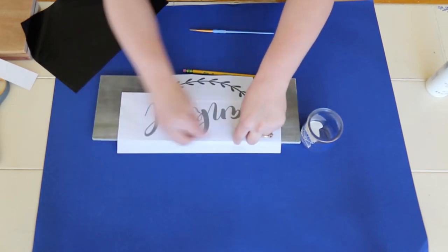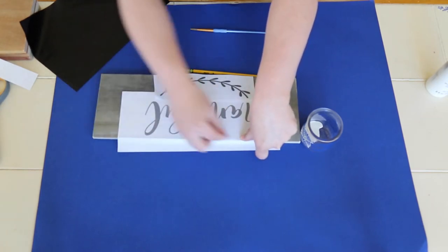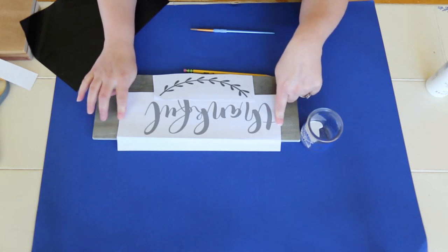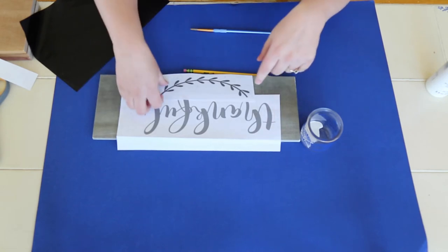I'm going to crease the edge just so that it's easier for my sign to stay in place. You also could get a little piece of tape and tape your design to the wood board.